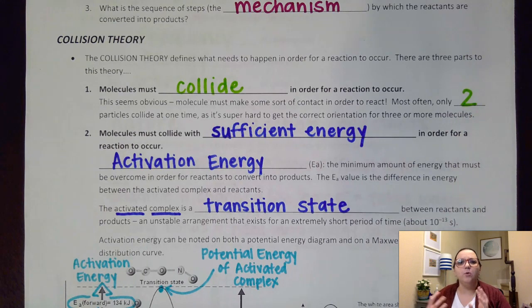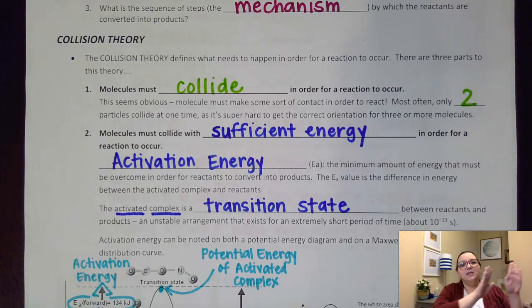It's very hard to get three or more particles to collide with enough energy and in the right orientation, so most of the time we're just kind of doing two at a time. Now if a reaction does involve more than two particles, then that's where a mechanism would be involved and what kind of order would we need to collide in in order to get us to products.